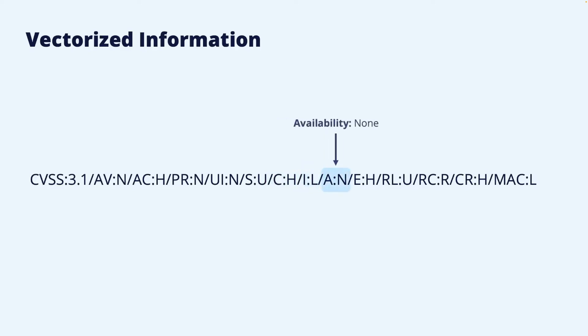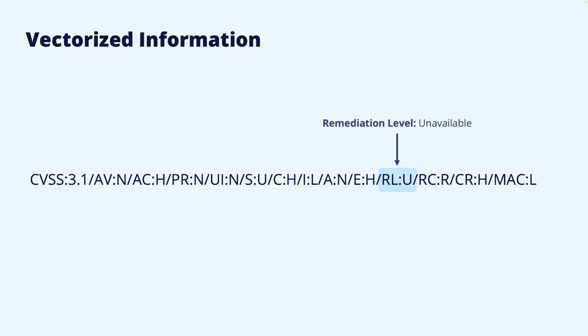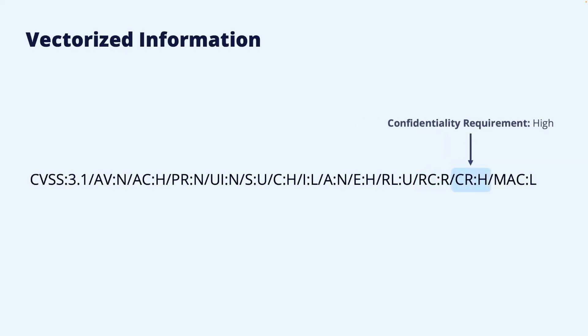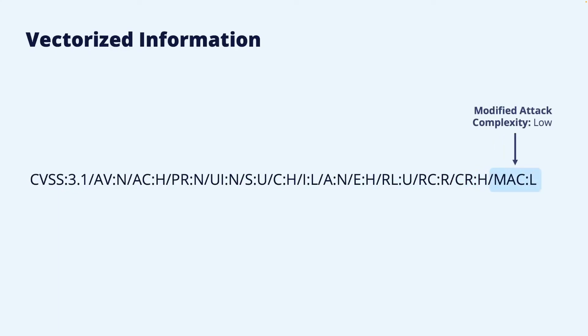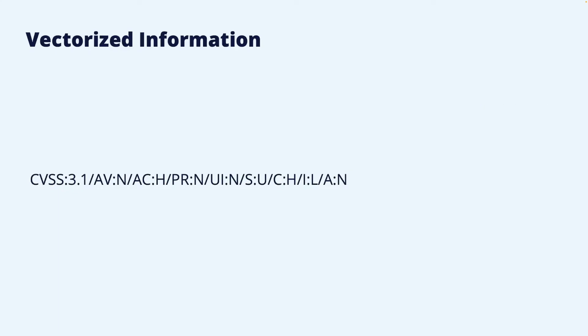The temporal metrics were exploit code — high, remediation level — unavailable, and report confidence — reasonable. For the environmental metrics, we have confidentiality requirements — high, and modified attack complexity — low. Often you only see the base metrics in the vector string, meaning that there are no metrics defined for the temporal and the environmental CVSS score.